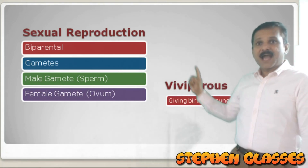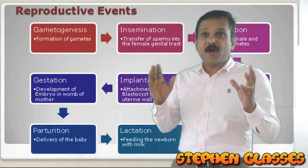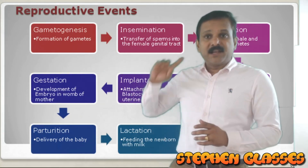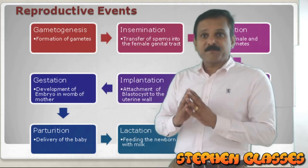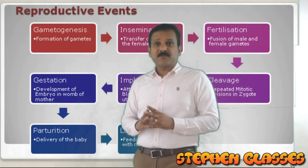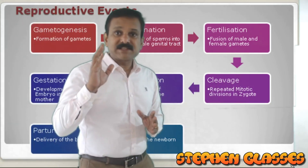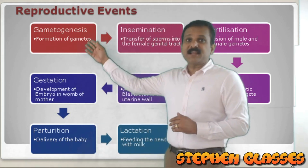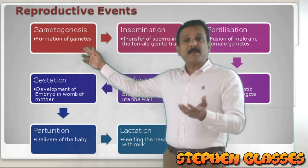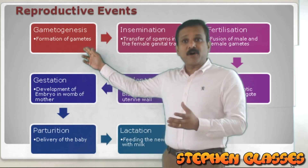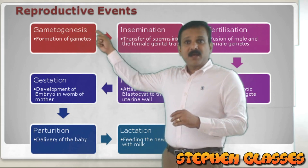Now we move to the different reproductive events — the different steps involved in human reproduction. Only after performing all these steps can human reproduction be completed. The first event in human reproduction is gametogenesis. What is gametogenesis? It is the formation of gametes — the formation of the sperm cell and ovum.